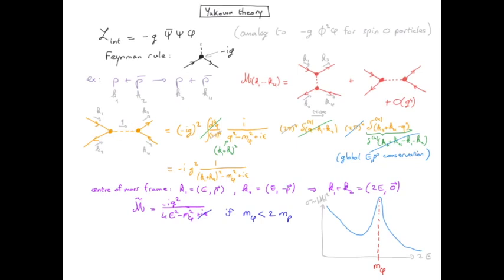However this resonance behavior is clearly due to this diagram and occurs when the mediator is produced on mass shell. And that's only possible when it's a heavy particle which is created, which is heavier than the sum of the mass of the incoming particles. Now we could ask why do we have something which is still finite and doesn't diverge to infinity because we have a division by zero.